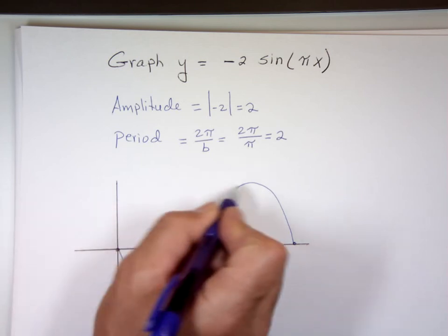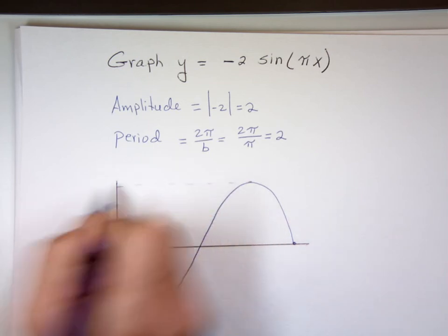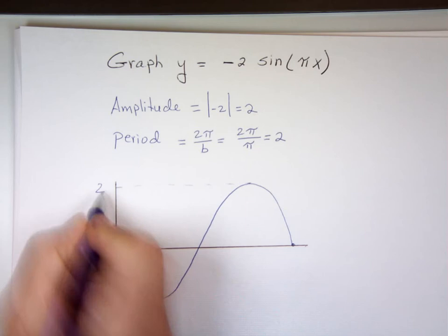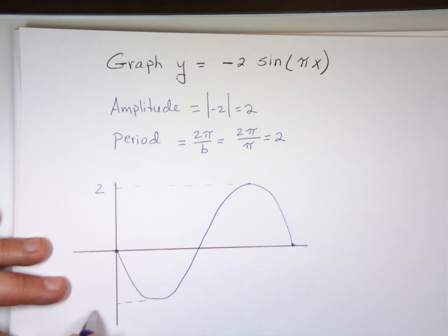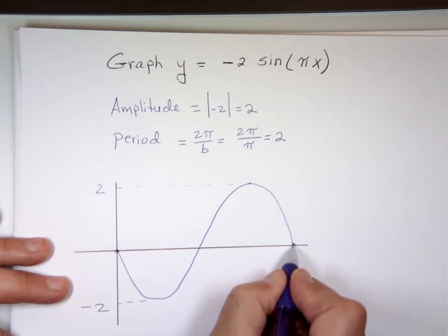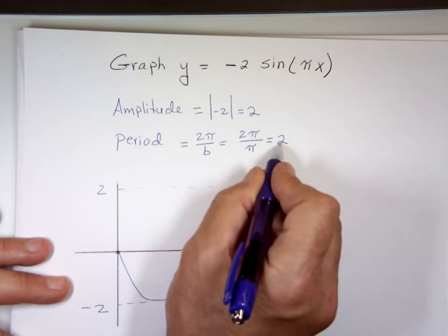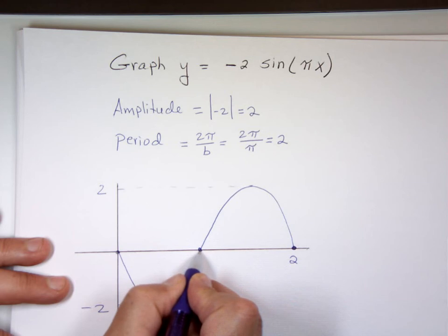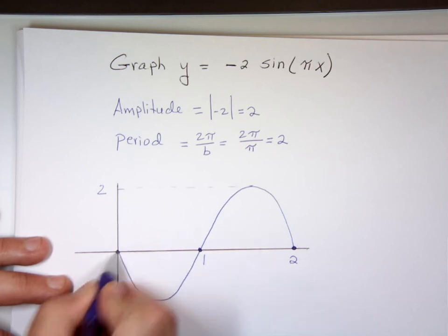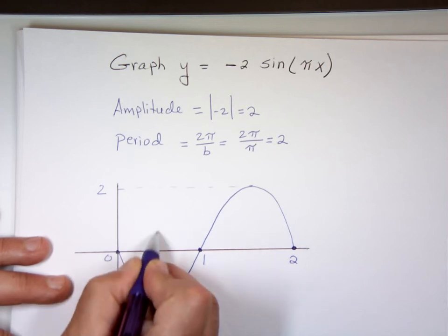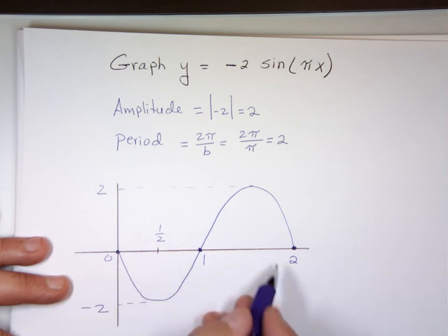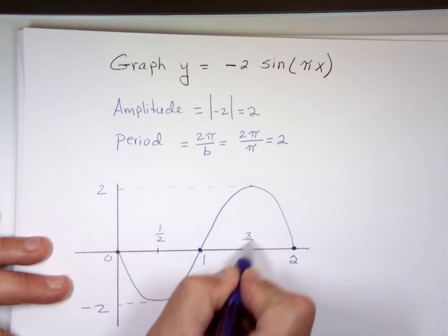What's the peak value here in the y direction? 2 down here is negative 2. What's this number going to be? That's a 2, right? The period is 2. What's this one then? 1, 0. This will have to be a half. What's halfway between 1 and 2? 3 halves or 1 and a half.